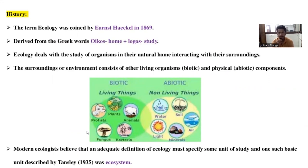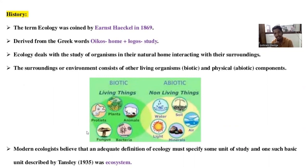Today we learn about ecology — what is the meaning of ecosystem, what is the meaning of food chain, and what is the meaning of food web. Ecology is nothing but the study of living organisms and their interrelationship with the environment — the study of living organisms and their interaction in a natural environment. This is called ecology.